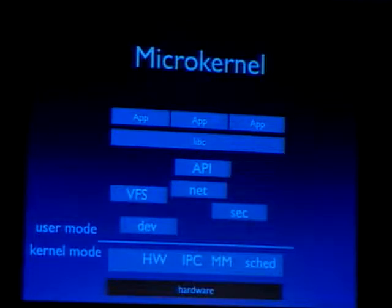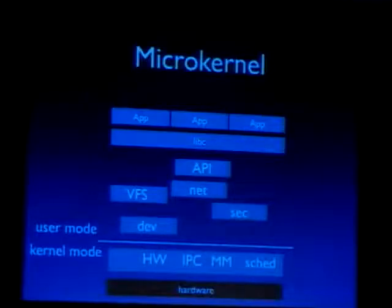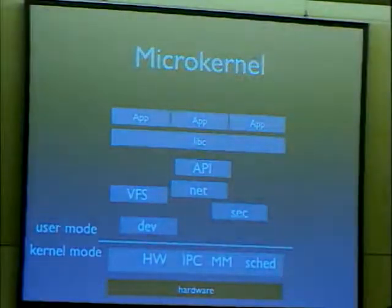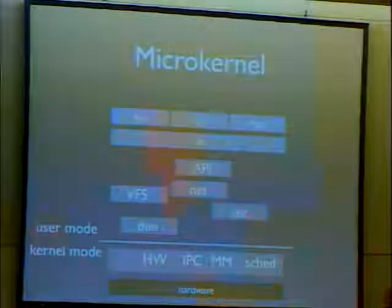Components like the file system or networking are each implemented in their own address spaces in user mode. Microkernels have the advantage that a crash in a driver, file system logic, or network protocol does not necessarily bring down the whole system — the faulty component can be restarted like a user application. A similar advantage applies to security vulnerabilities. CMU decided to reuse the BSD kernel codebase, ripped out the components already implemented by Mach, and ran the rest in user space as a single server.